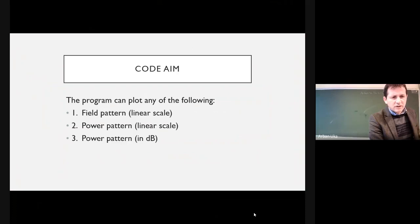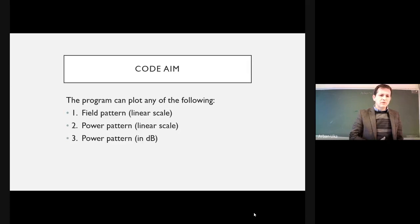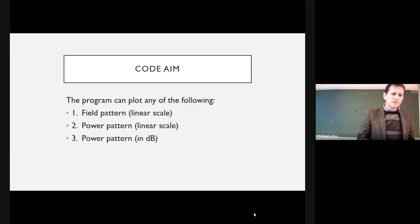We have the code. With these codes you can draw the field pattern, which would be in the linear scale, the power pattern, which is in fact the power pattern. Since the power is always proportional to the electric field squared, the first option is the projection of the magnitude of the electric field E, the second is E squared, and the third is the power pattern in decibels.